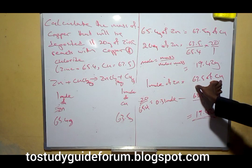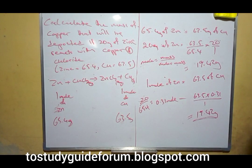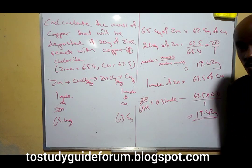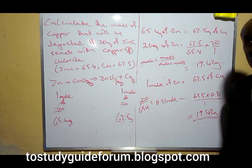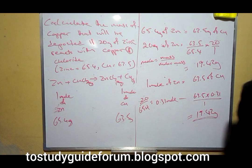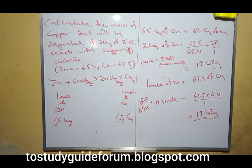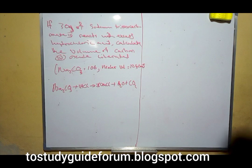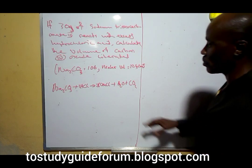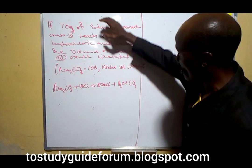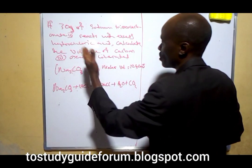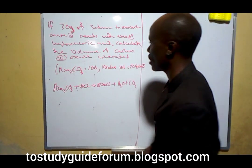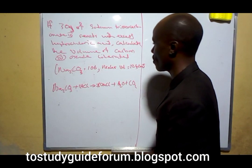We return it back to mass to get the desired result. The next one we're going to look at is a mole-to-volume conversion. Here we have another question: 30 grams of sodium carbonate reacts with excess carbonic acid — calculate the volume of carbon dioxide liberated.